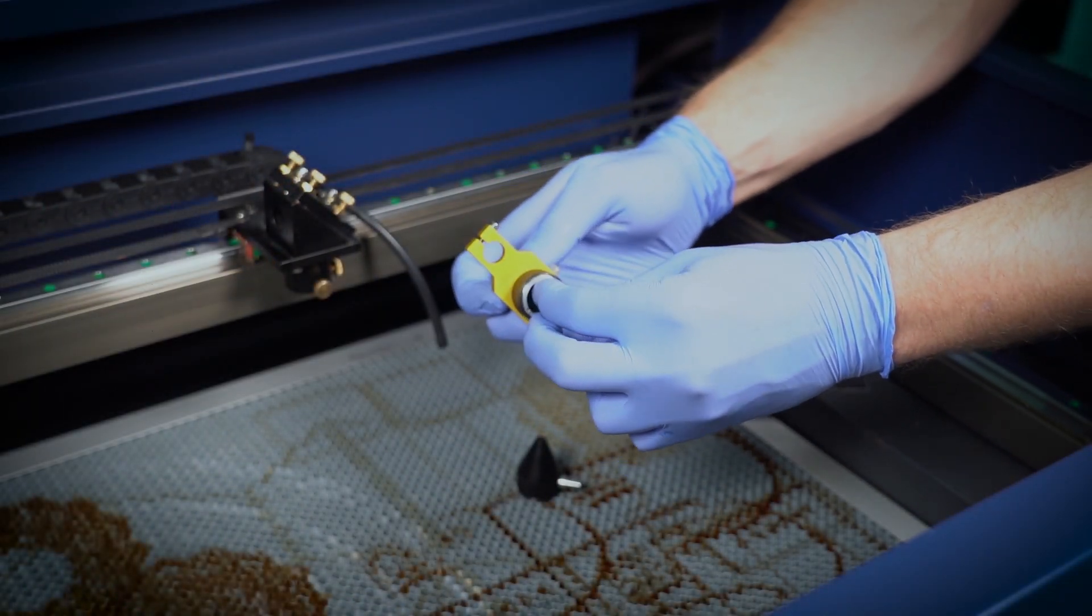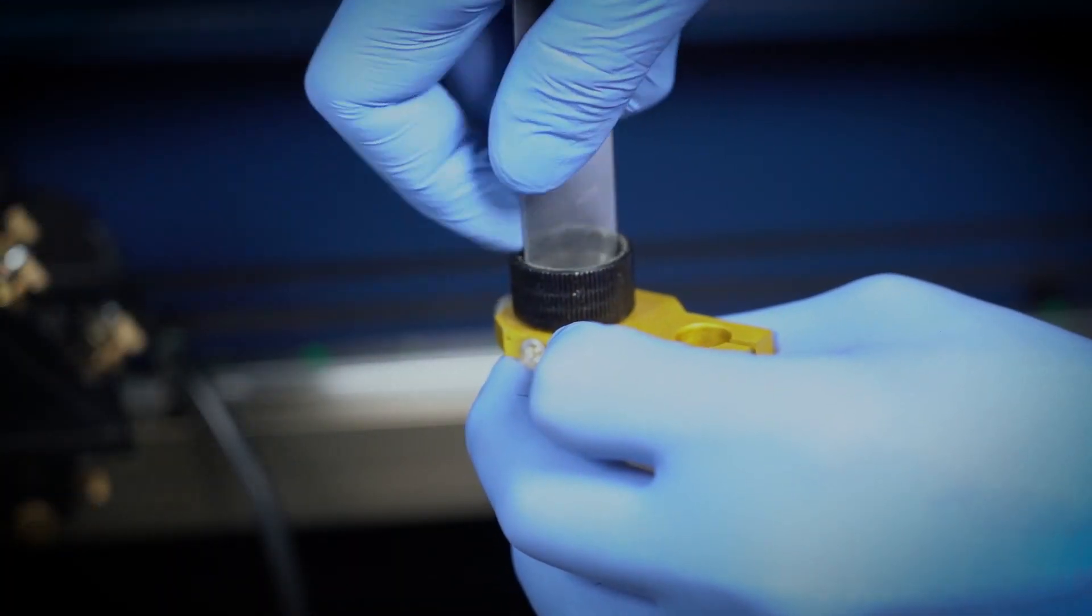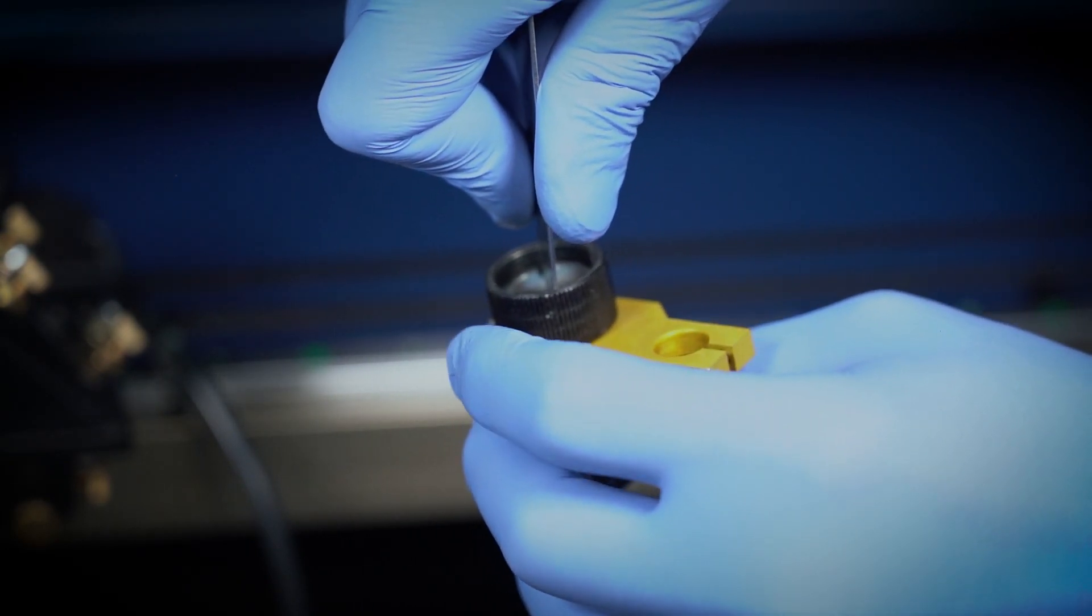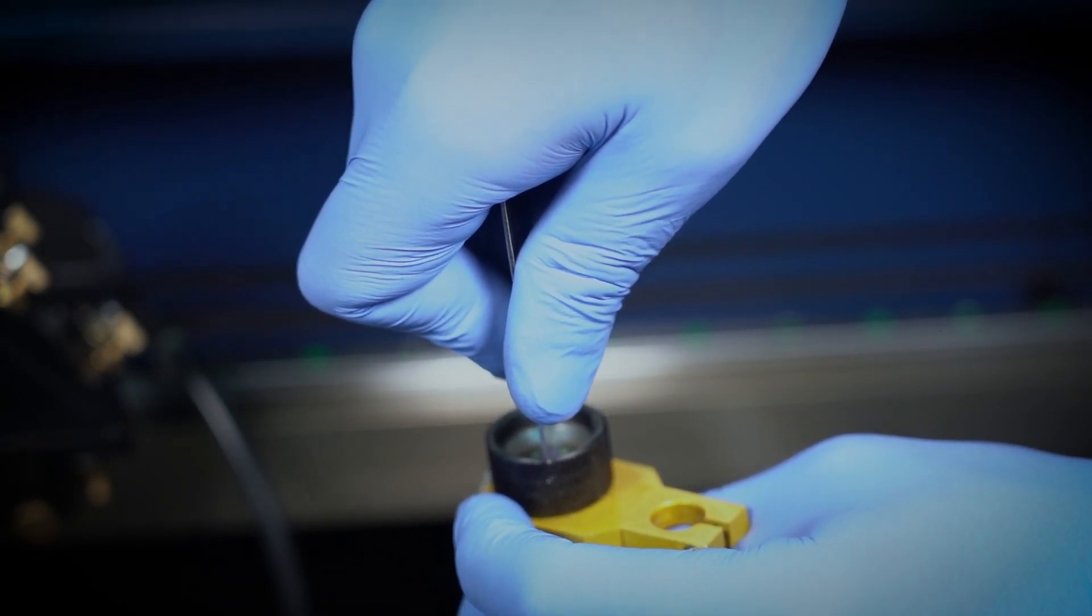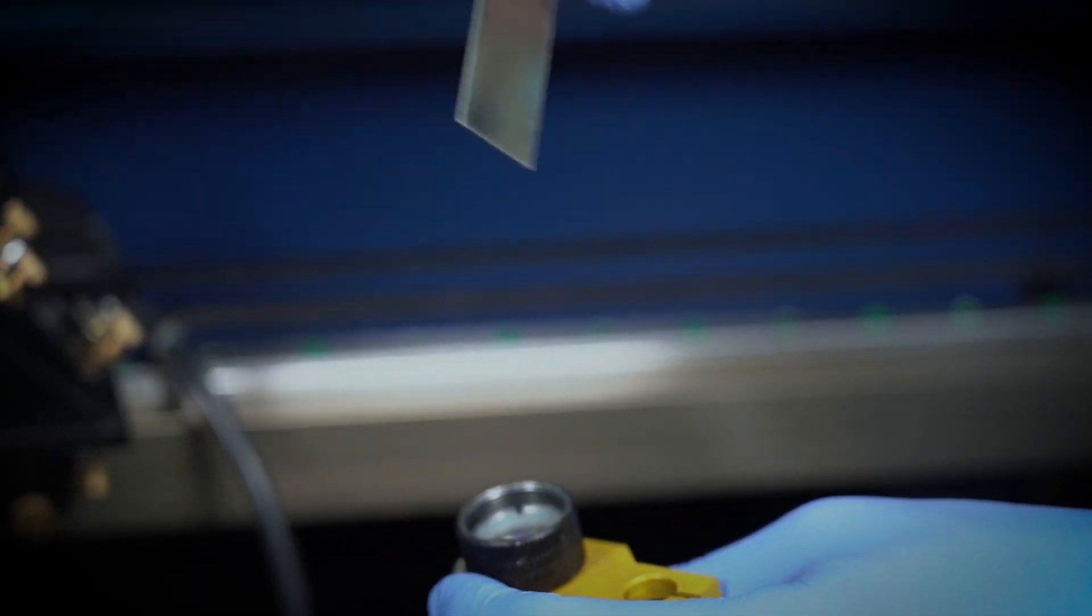The silver collar screw, put back in. Nice and tight, but not so tight that you're going to push too much pressure on it and crack that lens.